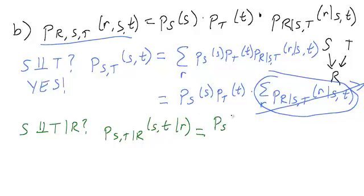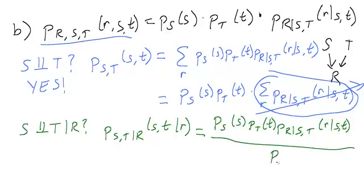So this is P_S, P_T, P_R given S,T divided by P_R. And if we try to factor this, we'll see that we run into trouble when we get to this term right here. Because in general, this term is not going to factor. We don't know how S and T interact here, and there are no simplifications we can do to make this term go away. So here, S and T are not conditionally independent given R.